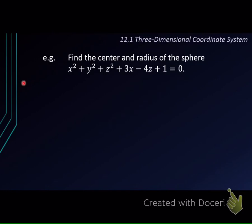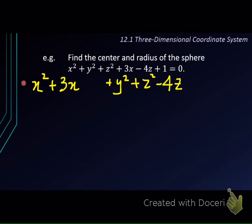First, we do the grouping — we put all the terms that have the same variable in one group. That gives us: x squared plus 3x in one group, then plus y squared (no other y terms), then plus z squared minus 4z in one group. Equals negative 1, bringing the 1 to the right-hand side.